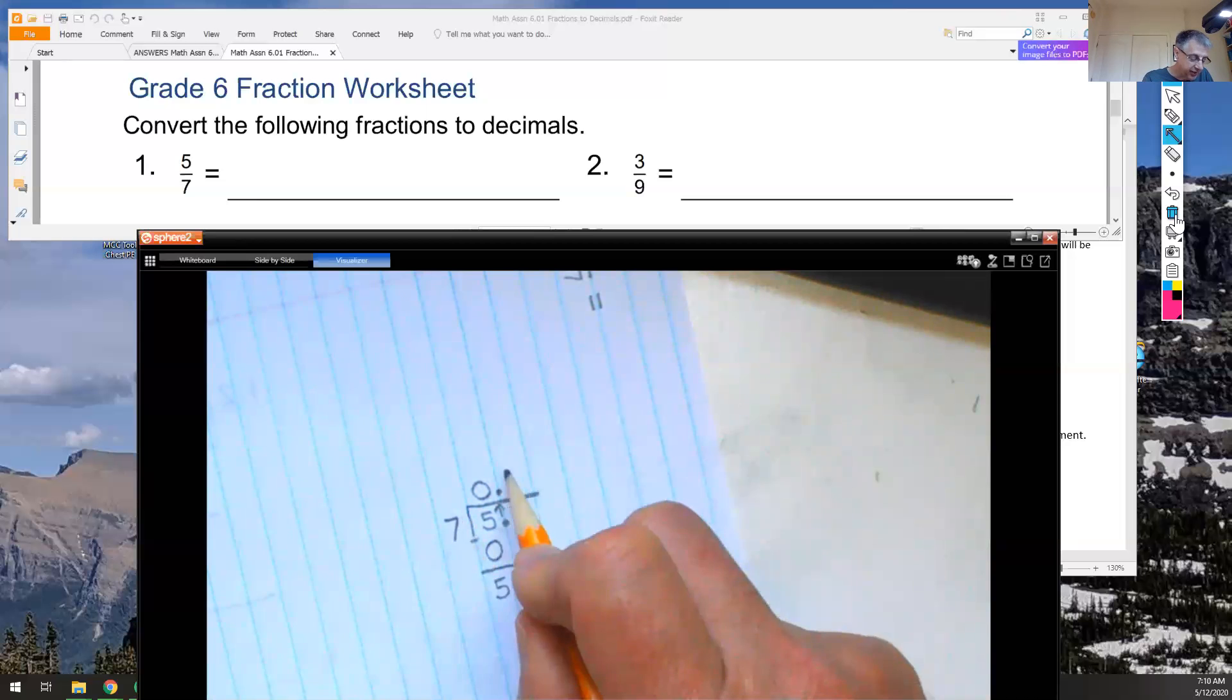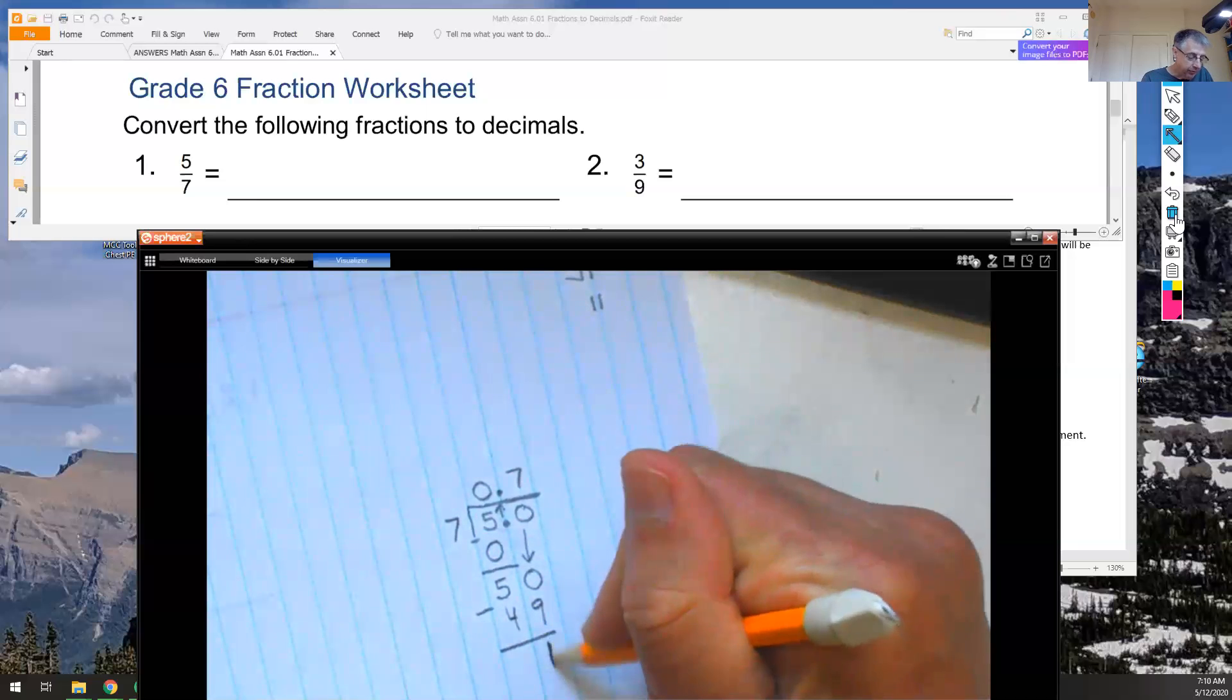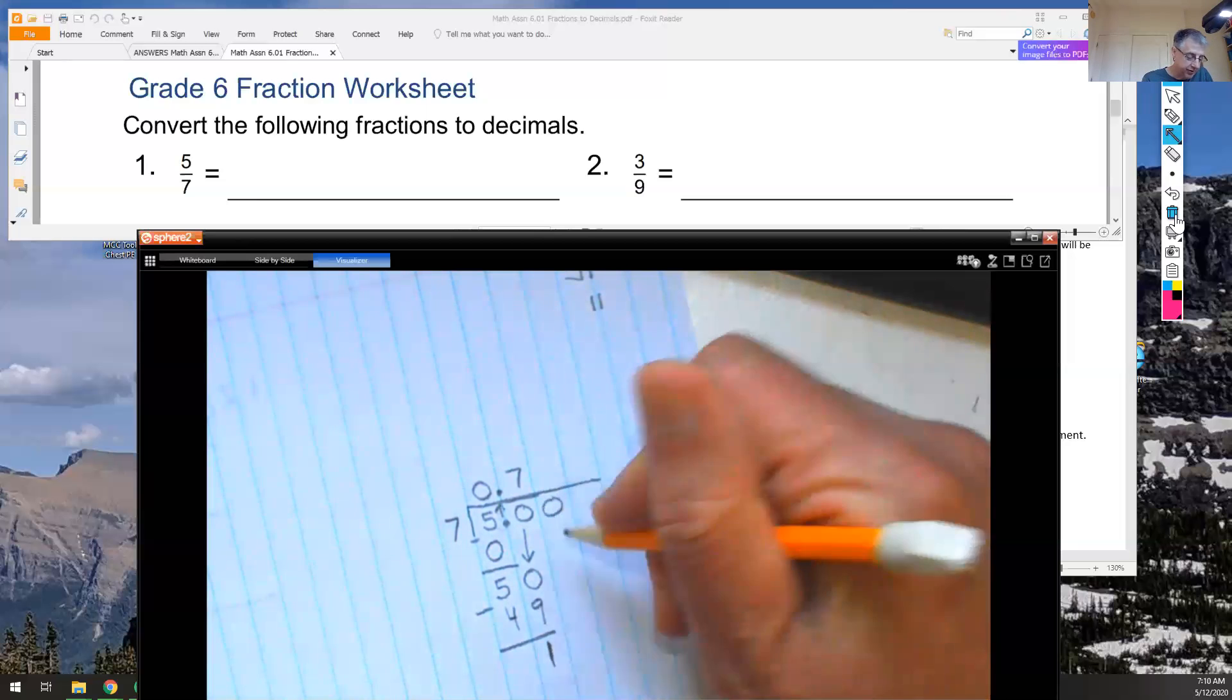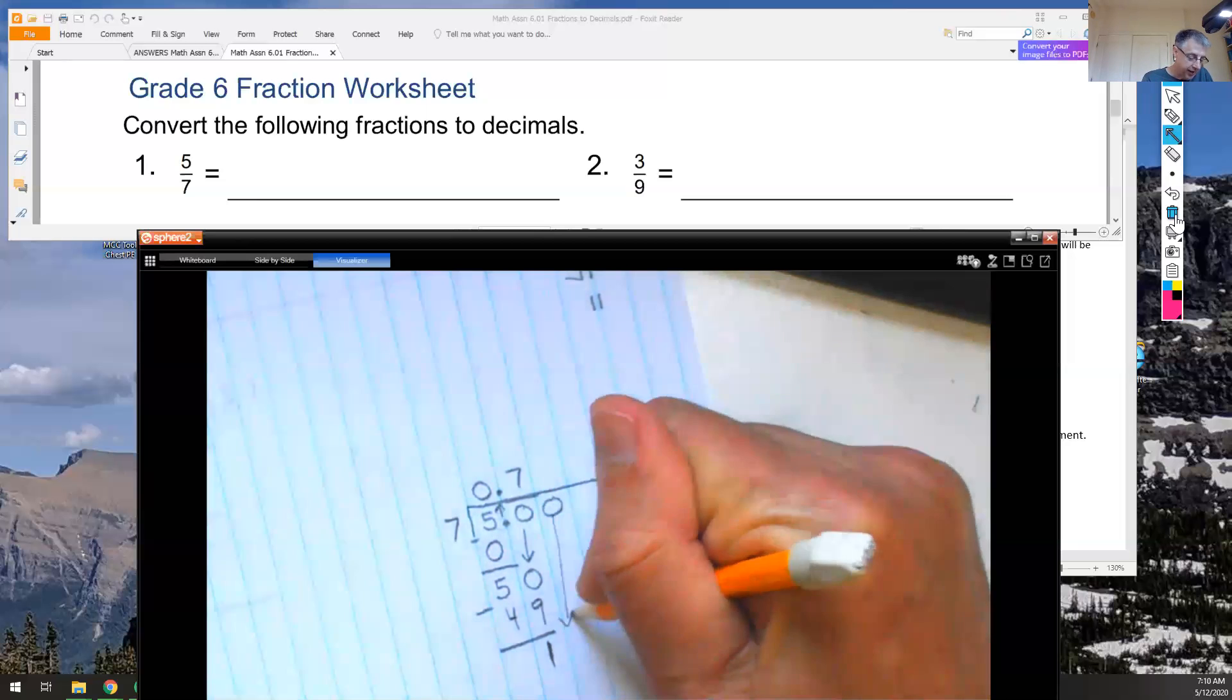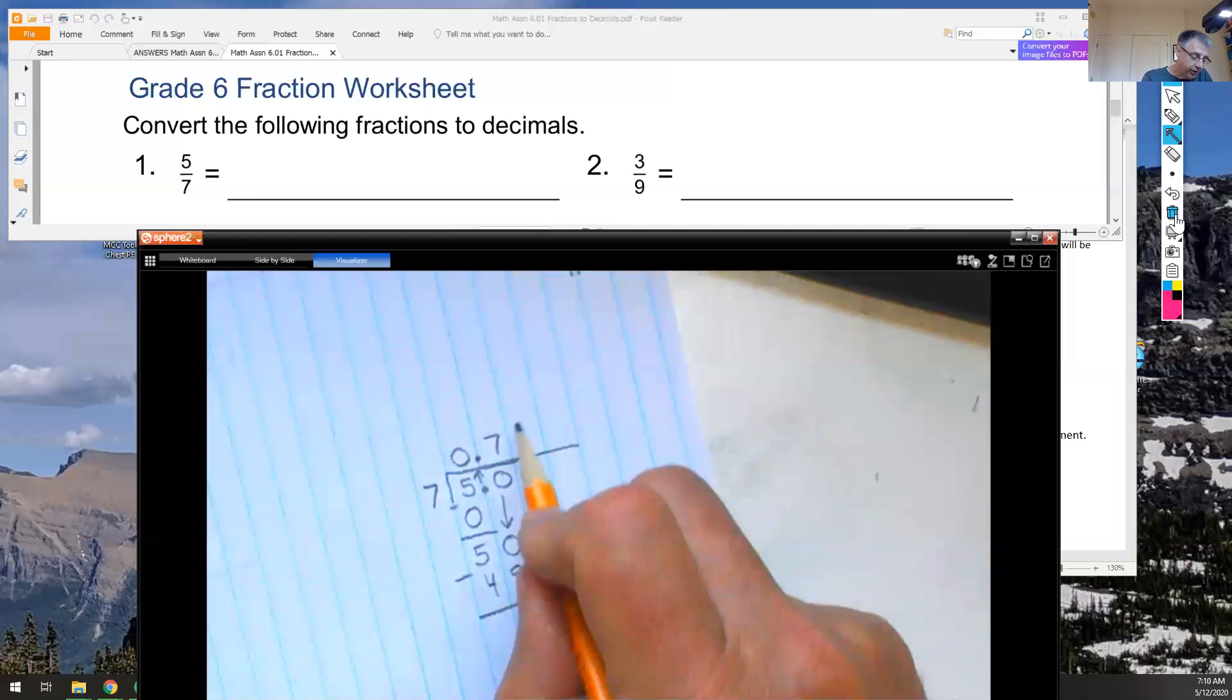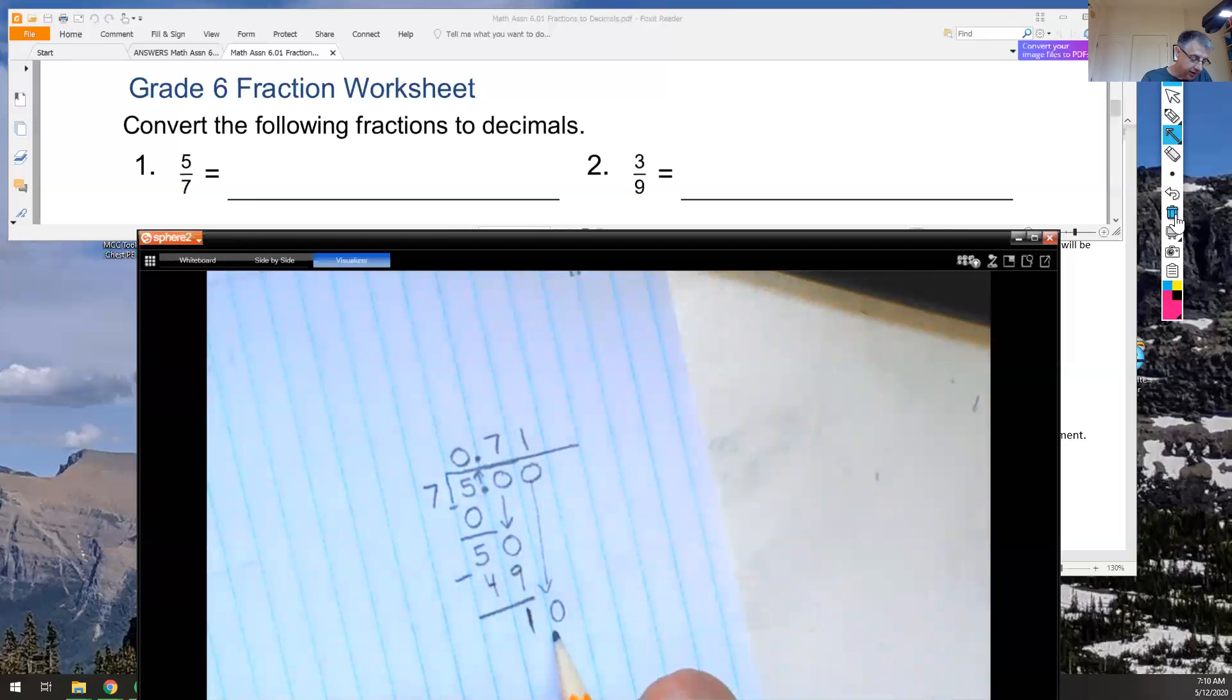I know that 7 times 7 is 49. 50 minus 49 is 1. Now I have a remainder, and boys and girls, I'm going to continue on until I get to the thousandths place. So I'm going to annex another 0 in my hundredths place and drop down the 0. I now have 10. 7 times 1 is close to 10. 7 times 1 is 7. 10 minus 7 is 3.